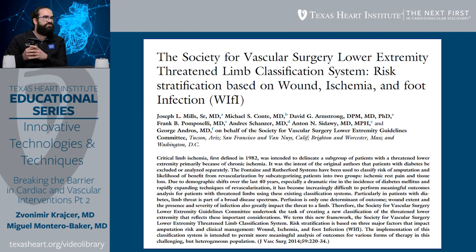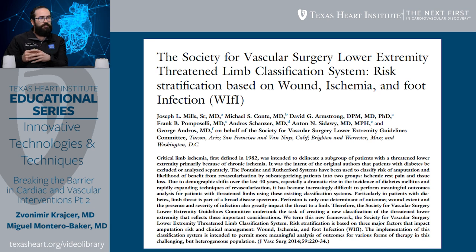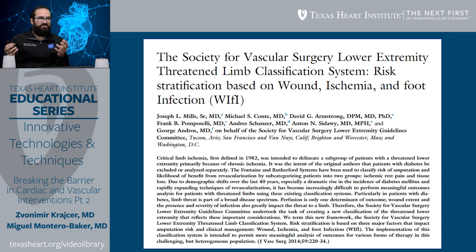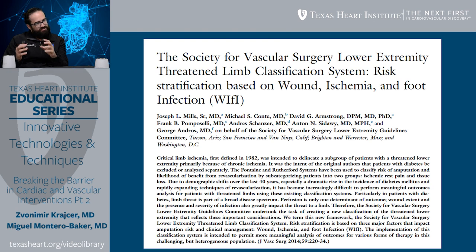When you have very heterogeneous groups of patients, it's really difficult to understand how to better suit their needs. A Rutherford class 5 with minor tissue loss can be a patient with infection, with no infection, with some severe wound or maybe a small wound. And it was, to a certain degree, very vague.